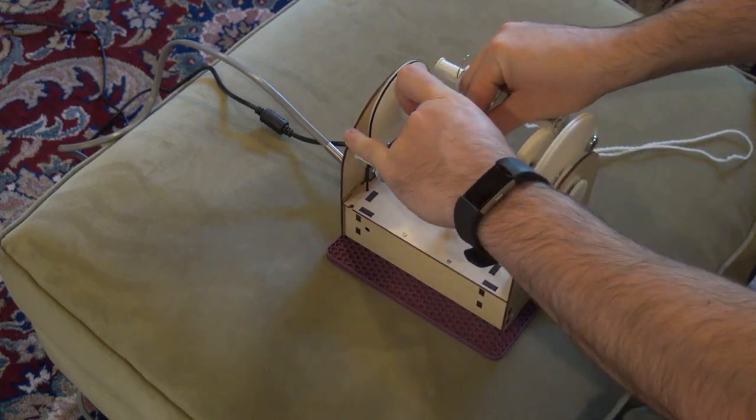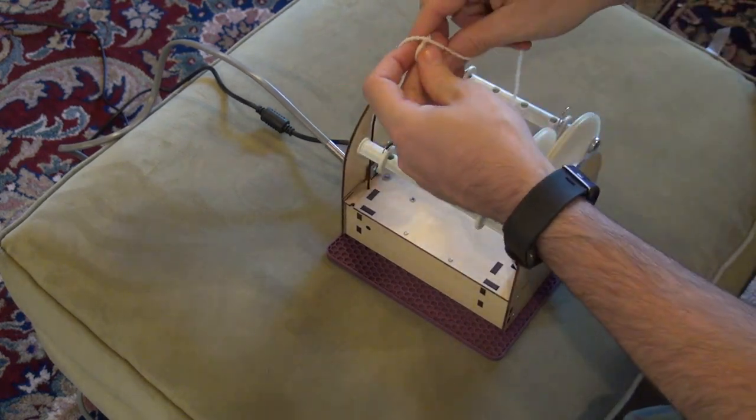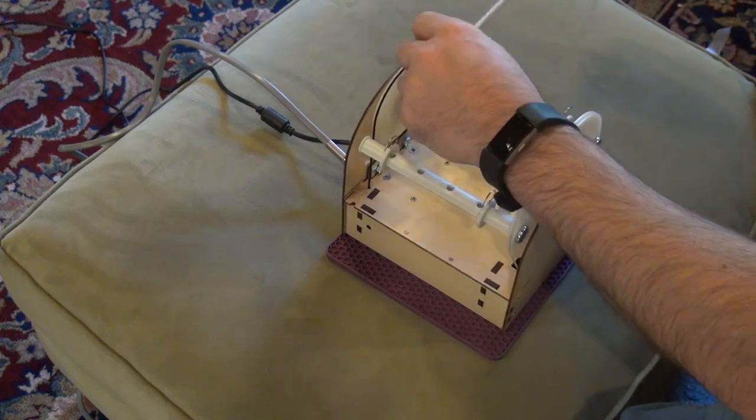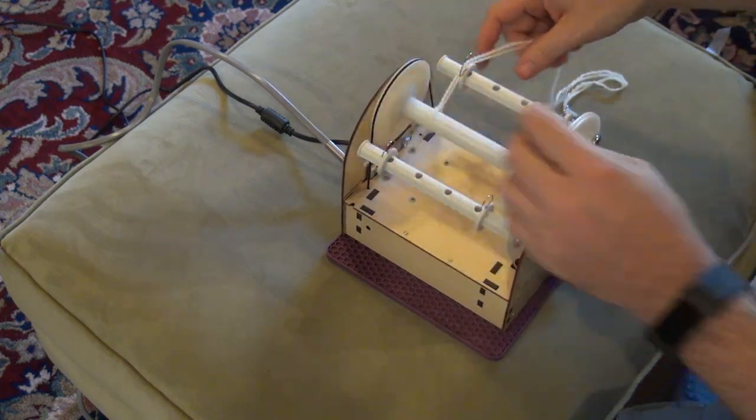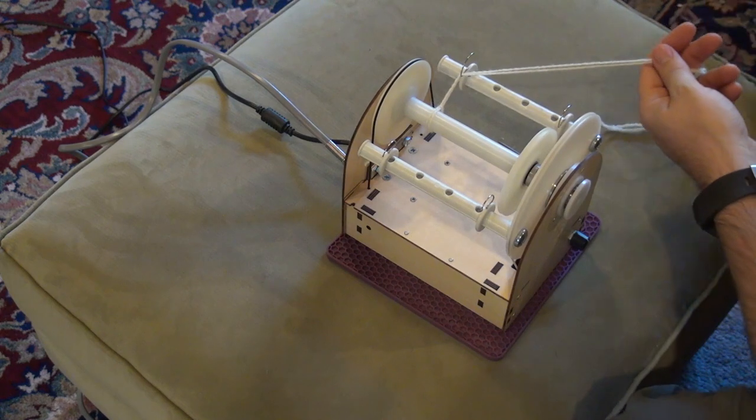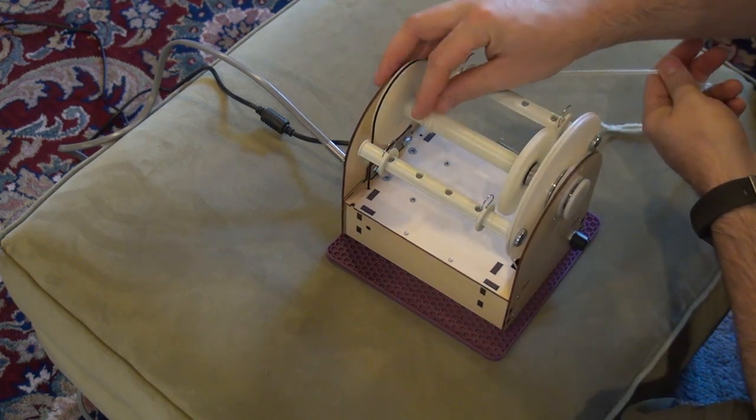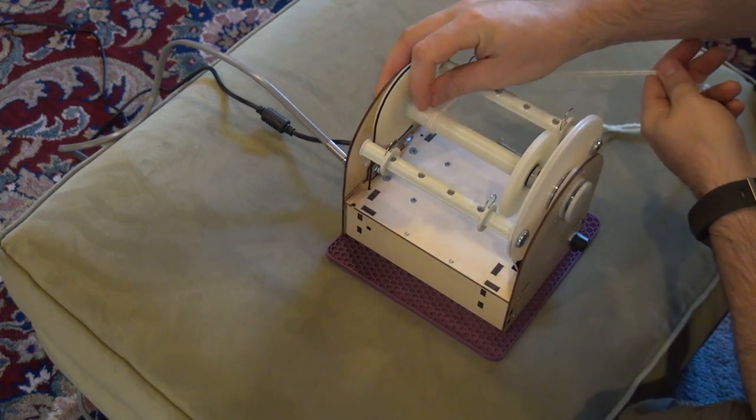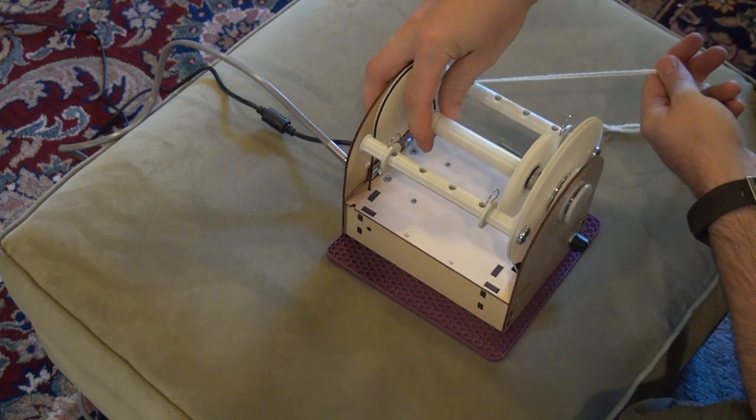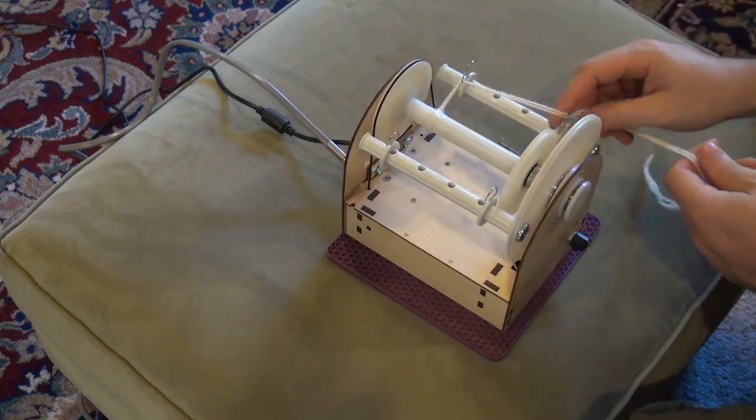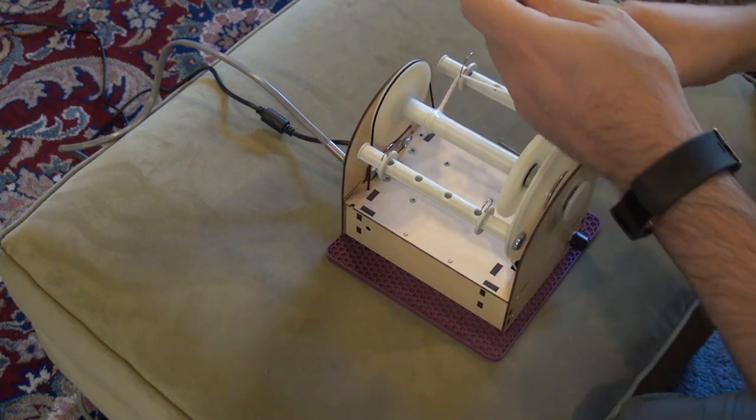Now I'll quickly show you how you can install the lead yarn on your Electric Eel Wheel. You just put it around the bobbin like that. There are knots you can use but I just tend to use a piece of tape to hold the lead yarn on. You don't really ever change the lead yarn so you just do this once per bobbin and then you weave